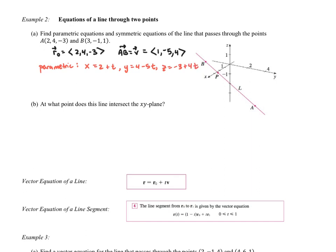For the symmetric equations, we solve each parametric equation for t. We get (x − 2)/1 = (y − 4)/(−5) = (z + 3)/4, and the whole thing equals t. Those are the symmetric equations for that line.